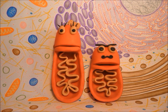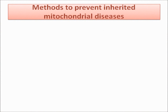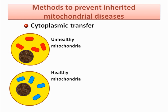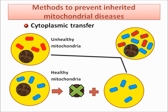Oh, I see. And isn't there any way to avoid this? Well, there are several methods to prevent inherited mitochondrial diseases. Firstly, cytoplasmic transfer: there is a cell with unhealthy mitochondria and a cell with healthy mitochondria. Scientists remove the nucleus from the healthy cell and transfer its cytoplasm, including its mitochondria, into the unhealthy cell.